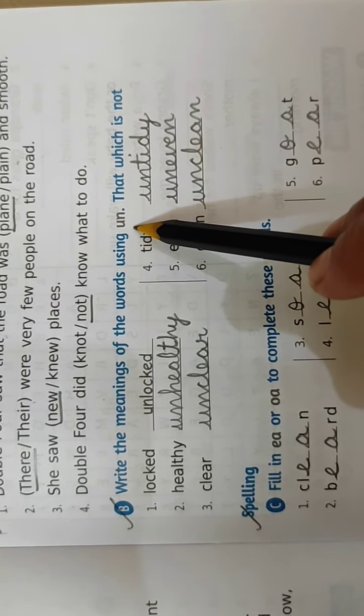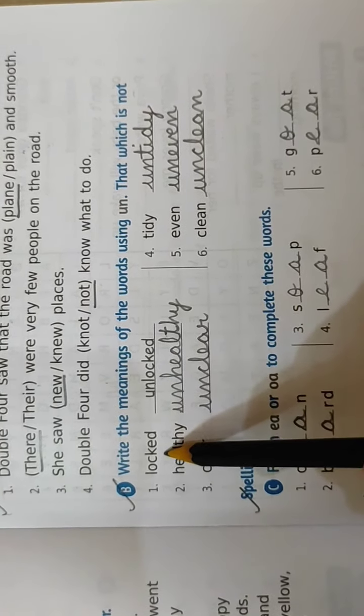Now let's move on to question number B. Write the meanings of the words using UN, that which is not. Locked, the first one is already done in your books. Locked, unlocked. The word will remain the same. Only you have to add UN in the beginning of that word.